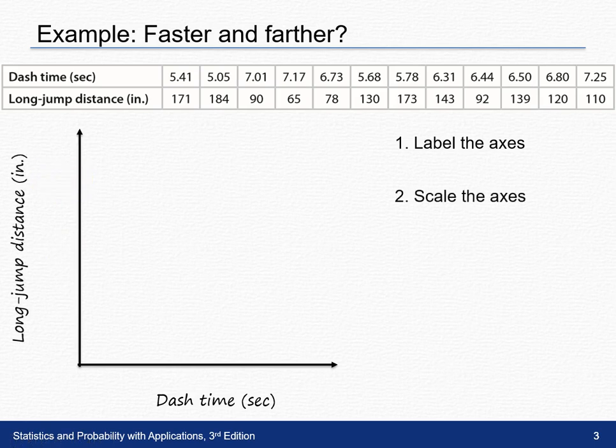Once we have our axes labeled, we need to scale them. I'm going to look at the dash times and see where my min and max are. My minimum is just above 5 and my maximum is above 7. I'm going to scale the axes to go from 5 to at least the maximum of 7.25.